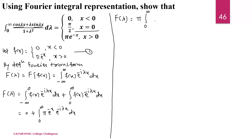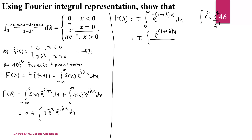Since the base is the same, we add the powers. Taking minus sign and x as common from the exponent, we get e^(−(1 + iλ)x). So F(λ) = π times the integral from 0 to ∞ of e^(−(1 + iλ)x) dx. Using the standard result, this integrates to e^(−(1+iλ)x) divided by −(1 + iλ), with limit 0 to ∞.